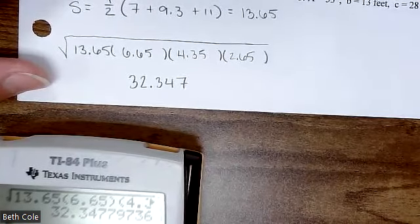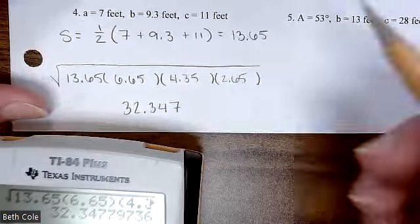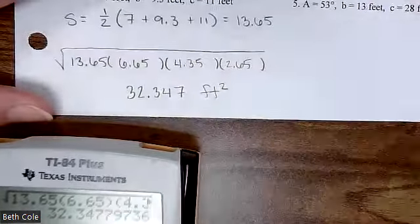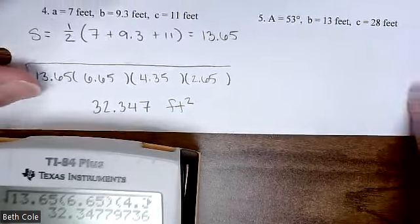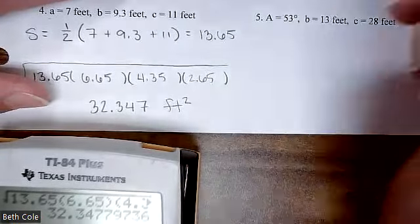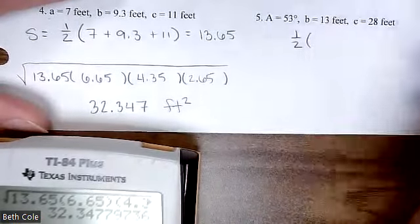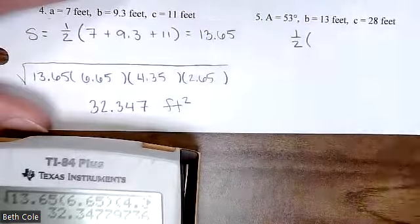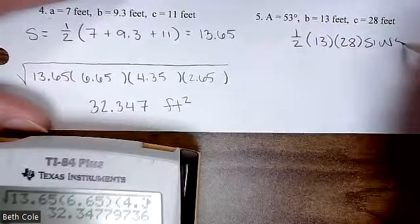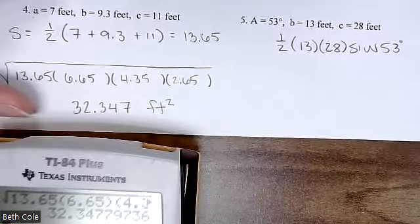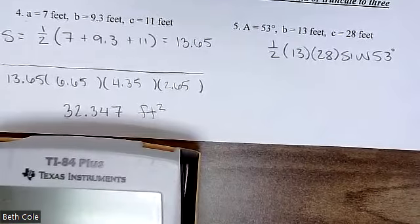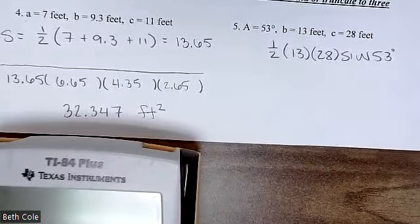I always bring up units — I've done this verbally but this time we're going to write it. Do you see how these are all in feet? So the answer is square feet, or feet squared, because it's an area. For the next one, you have an angle, and the formula is one-half BC sine of A.